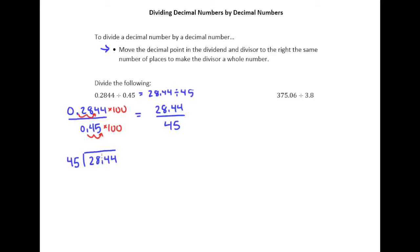So I'll begin this by sending this decimal point straight up. Of course 45 does not go into 2, it does not go into 28. So I'm going to go ahead and put a 0 out here for the whole part because I know there is no whole part.